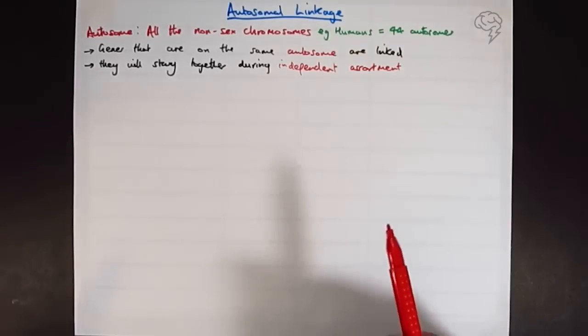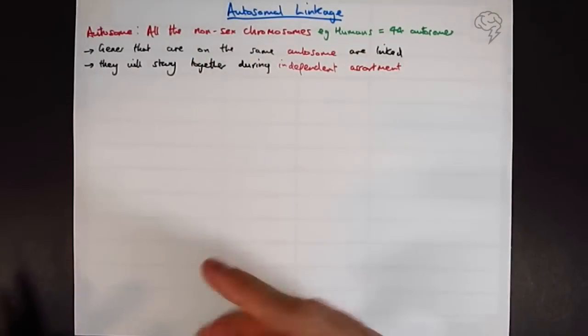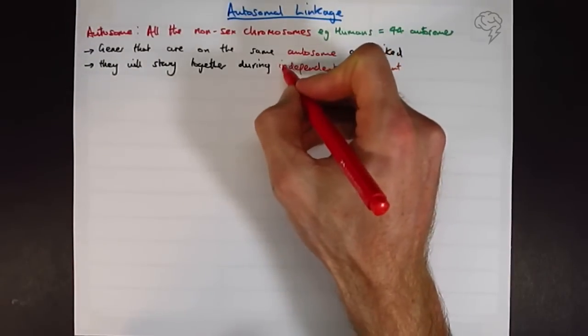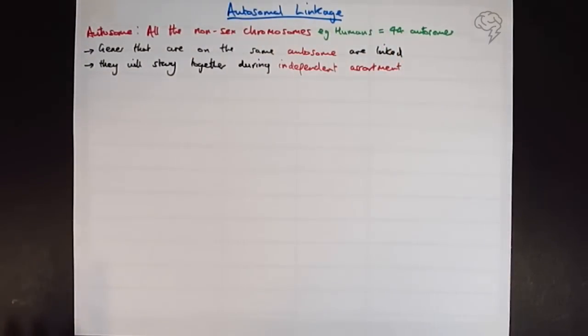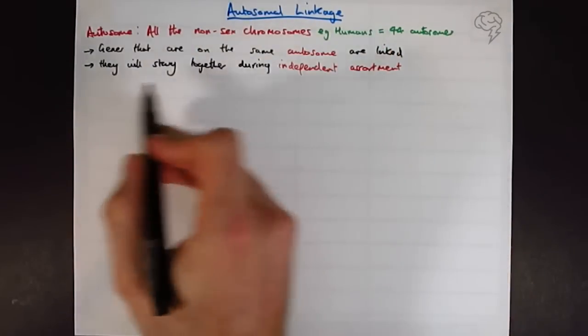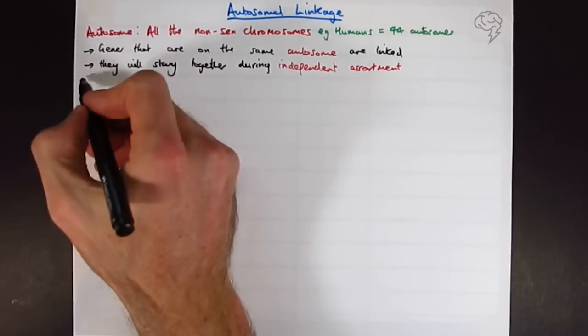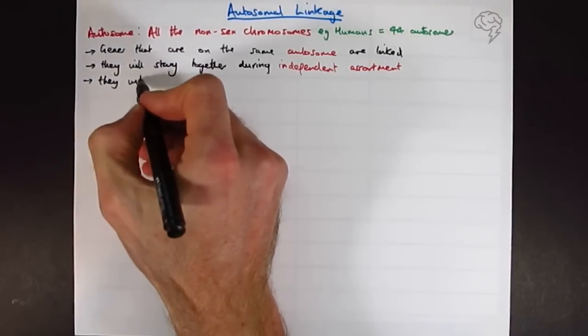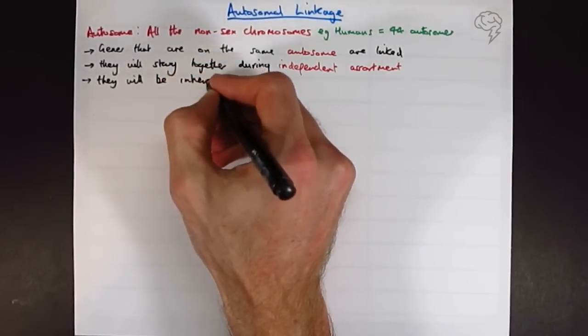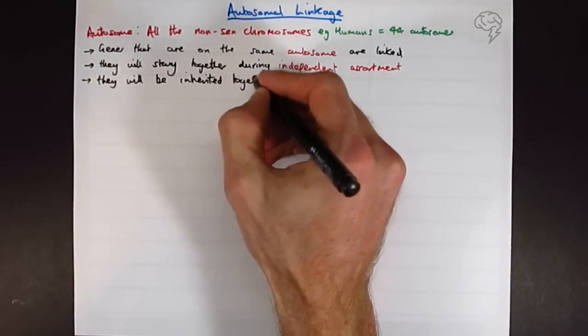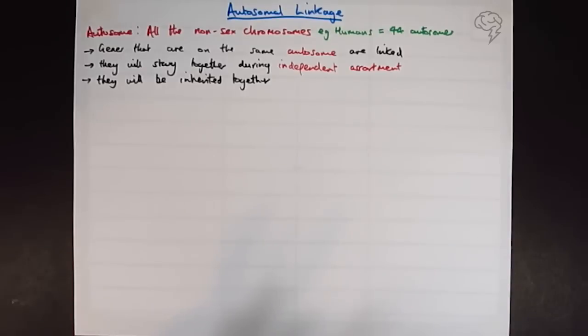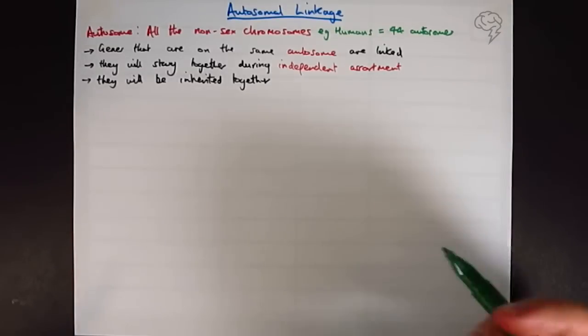You may call this independent segregation. Different exam boards, different teachers are going to vary. Choose whichever one you're most comfortable with. Both are going to get you the marks on the exam. So what does this mean? If they stay together during independent assortment, then that means they're going to be inherited together.